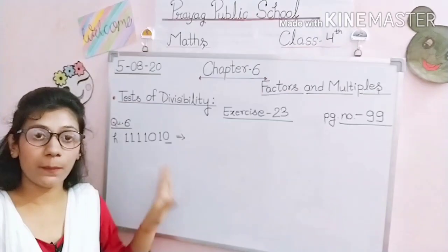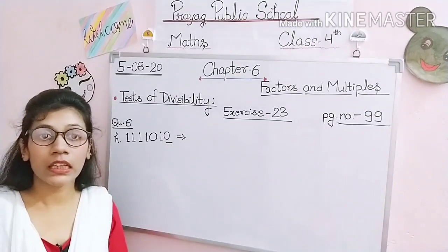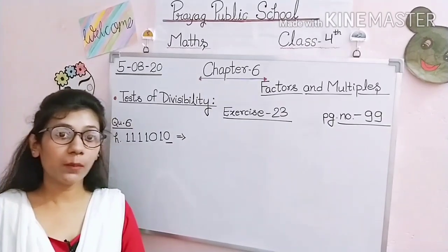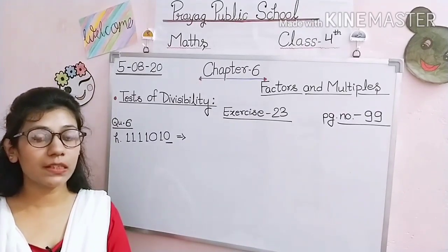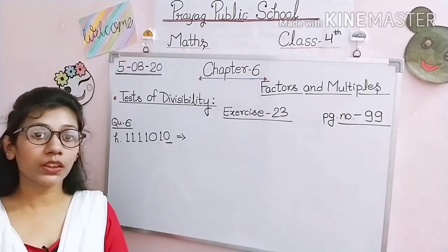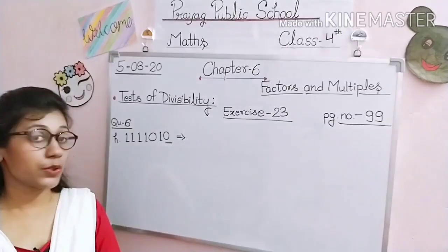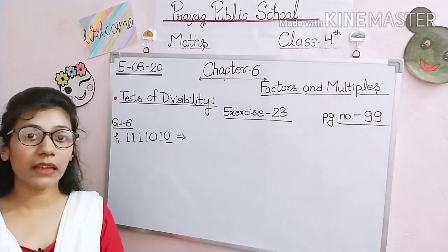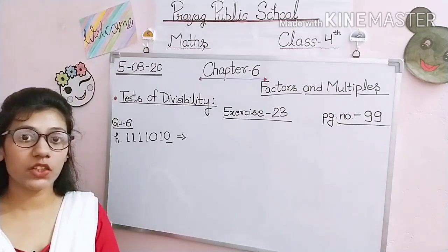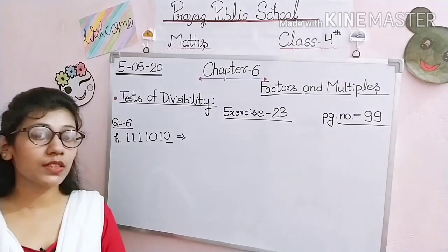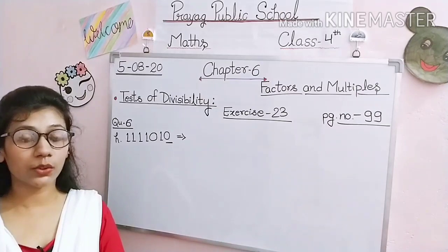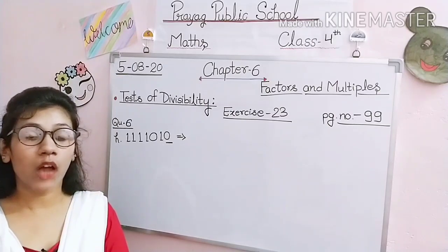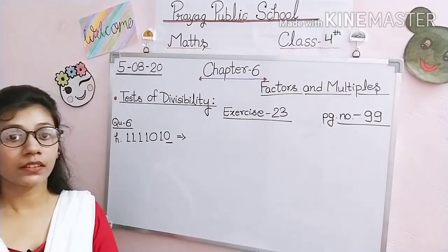Today we studied divisibility by 5, 6, 9, and 10, and also solved related questions. Now it's your turn to do the given sums in your homework register, very neat and clean. We completed chapter number 6, Factors and Multiples. Next time we will start chapter number 8, Estimation. We will first cover the pen-paper test chapters, and after that cover subject enrichment and activity chapters. I will provide notes for this chapter so you can check them. Keep practicing the questions. Thank you.